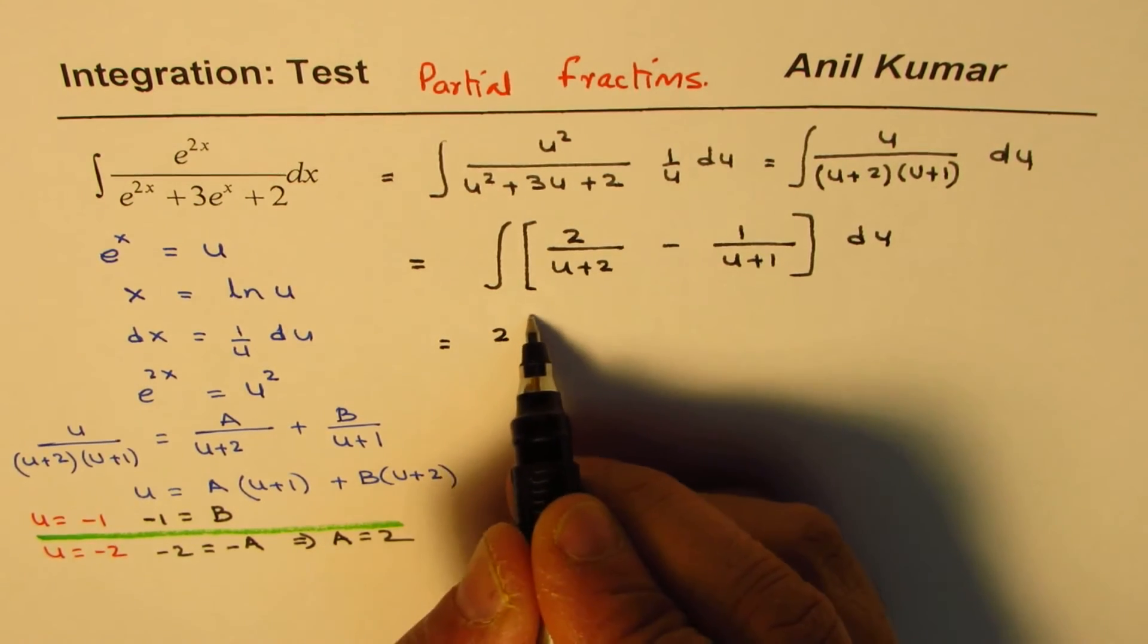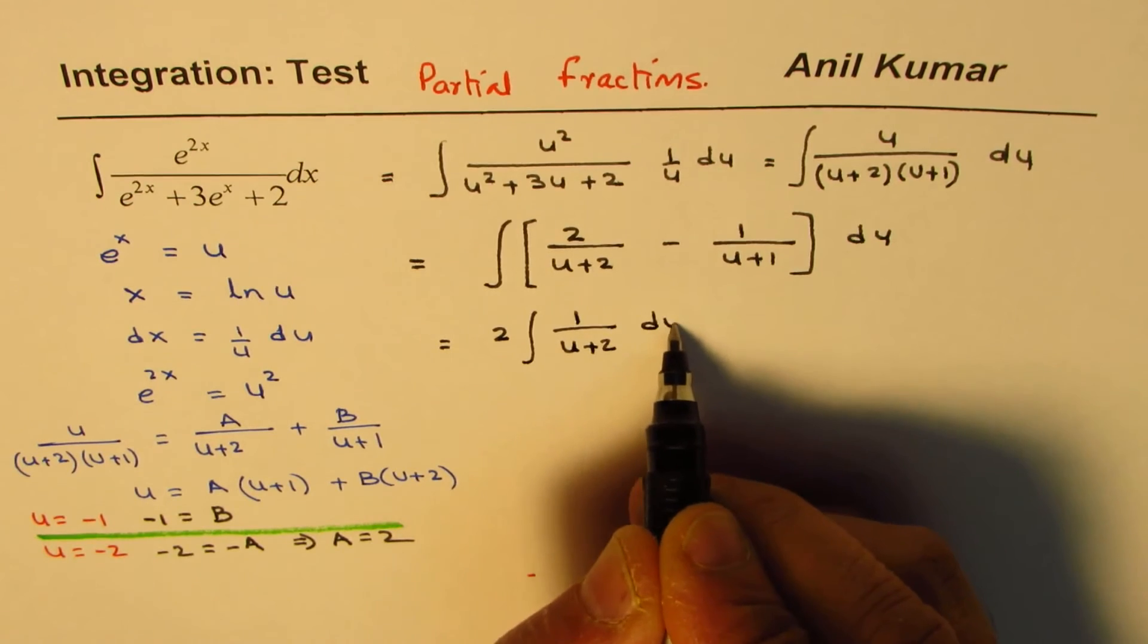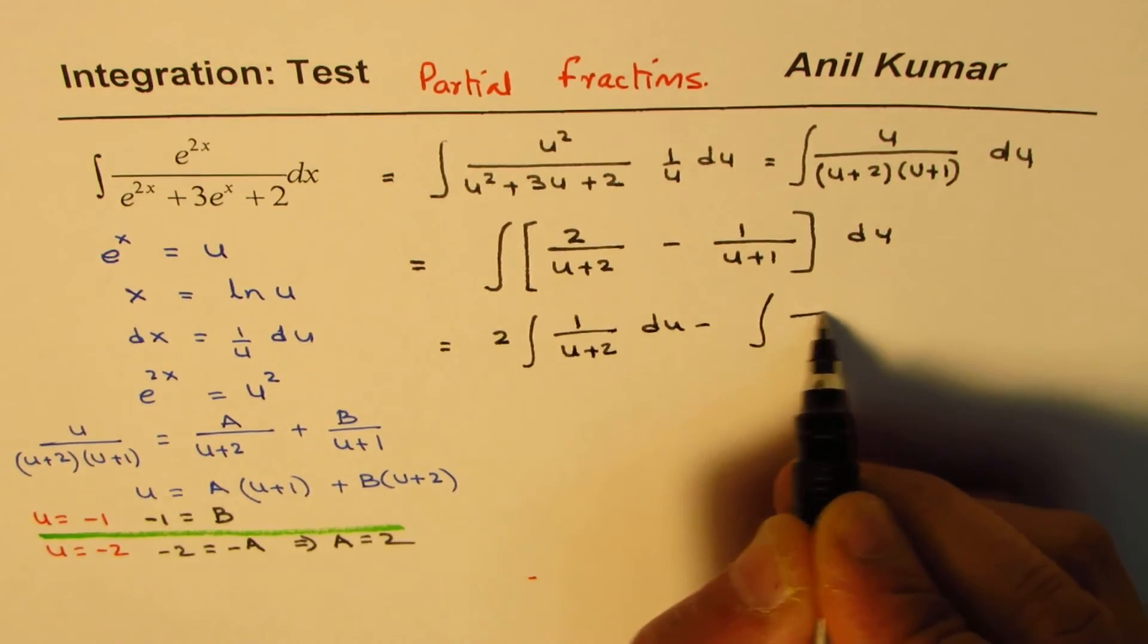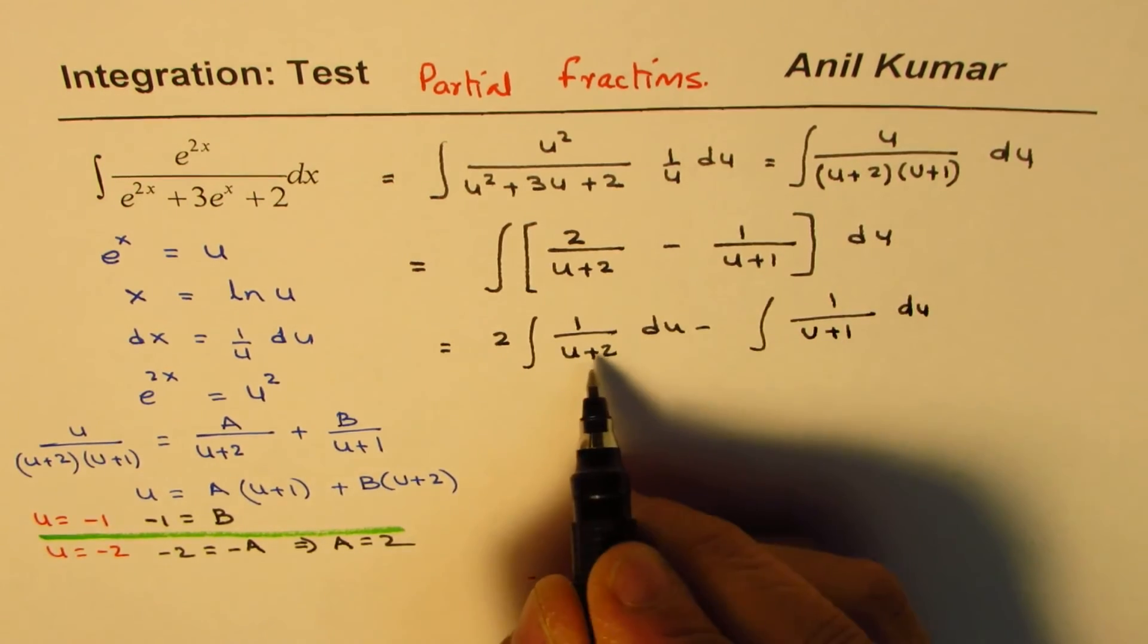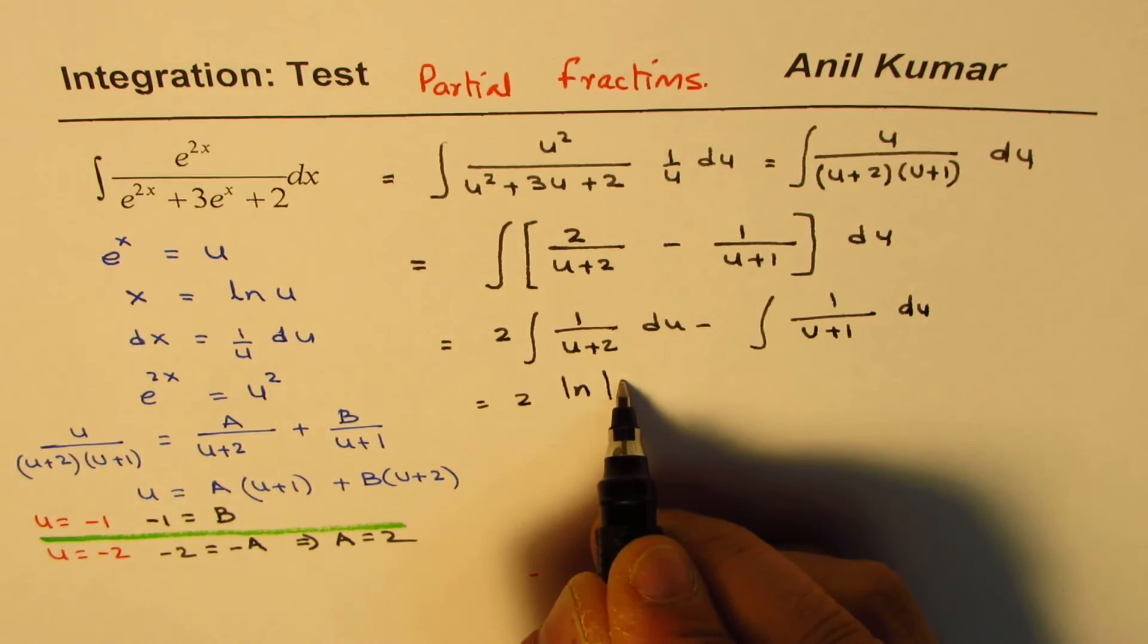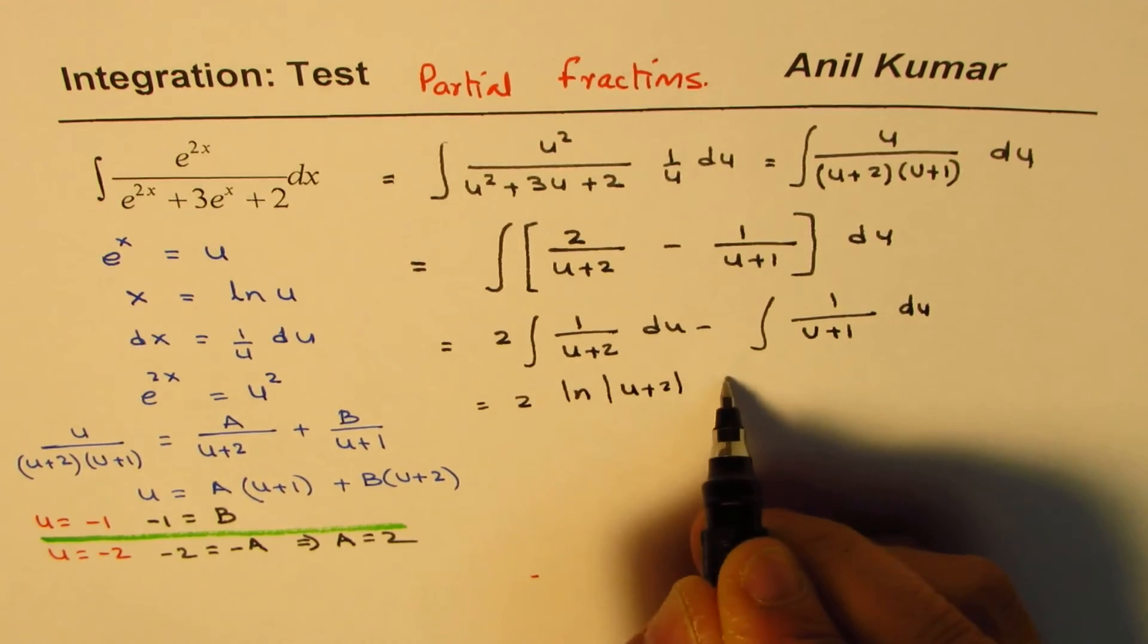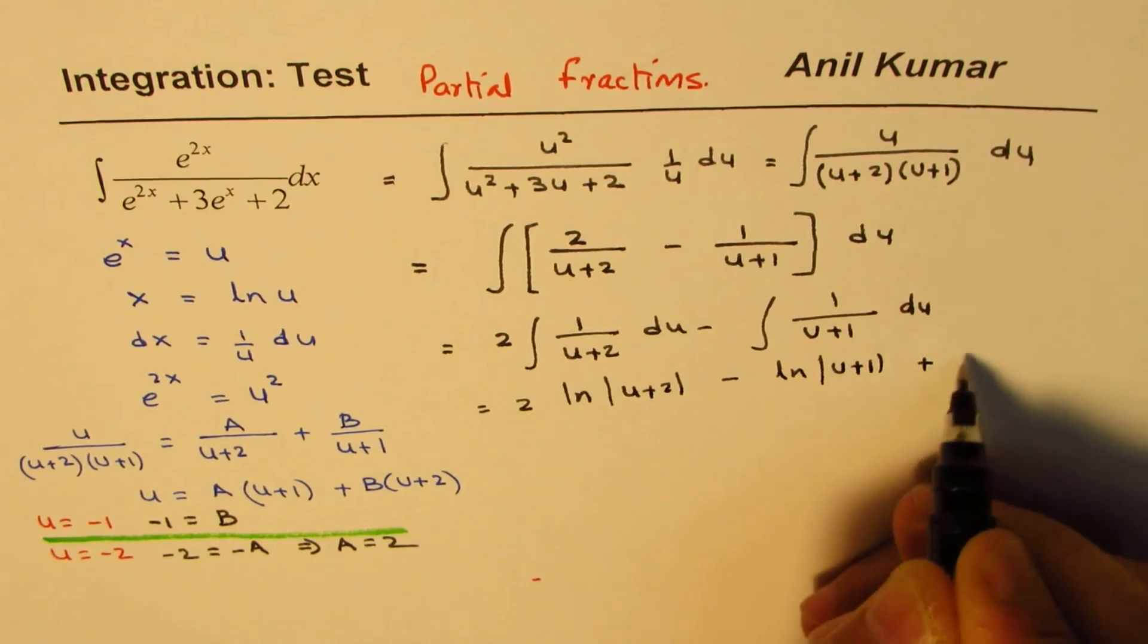So we could write this as 2, integral 1 over u plus 2 du, minus integral 1 over u plus 1 du. So this one gives you 2 ln u plus 2, and this gives you ln u plus 1 plus a constant.